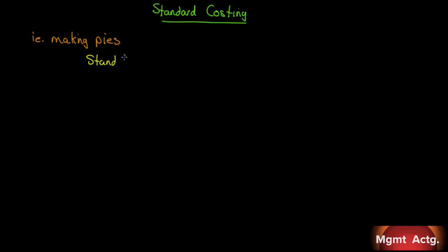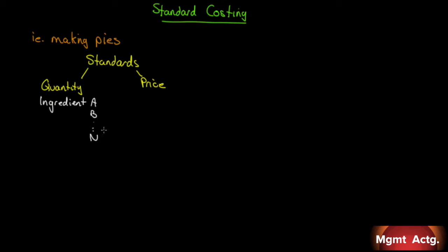We need some standard for the quantity that we use. We can't just throw in anything we want — there's a recipe that calls for a certain amount of this, a certain amount of that. And we have to buy these things. So our ingredients, A, B, all the way through N, will each have a price associated. We'll come up with some standard cost of how much it costs to make a pie — the standard quantity times price of those quantities. That's our standard price for the raw materials.